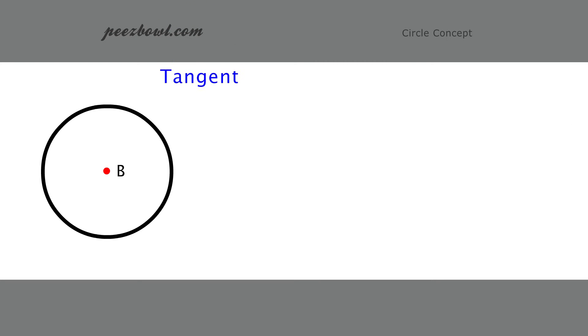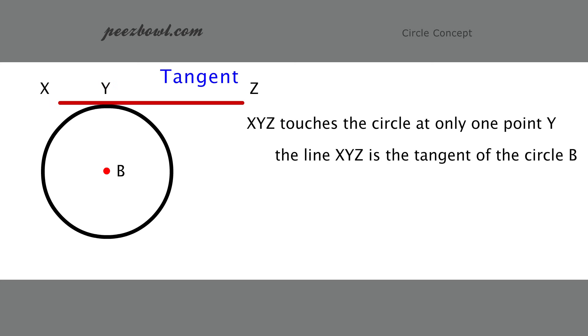Let us draw a line which touches the circle exactly at one point on its circumference. As shown in the diagram, the line XYZ touches the circle at the point Y. The line XYZ is called tangent of the circle.